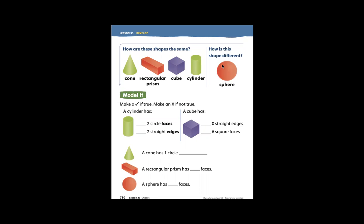How is a sphere different than the cone, rectangular prism, cube, and cylinder? Well, a sphere can roll. A sphere cannot stack. It cannot stack one sphere on top of another.